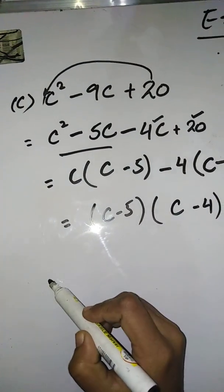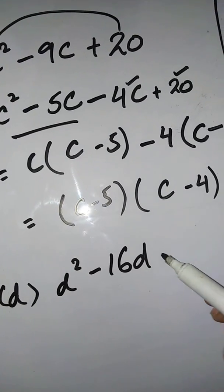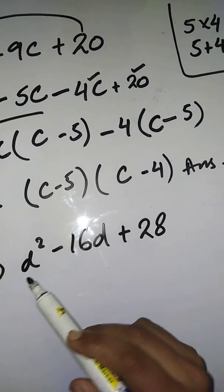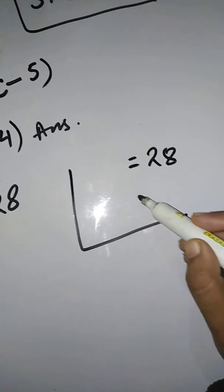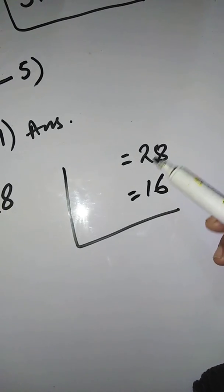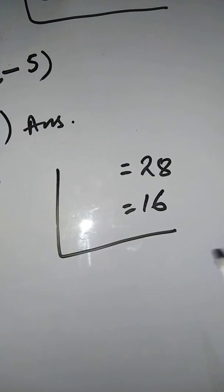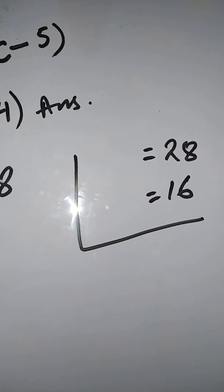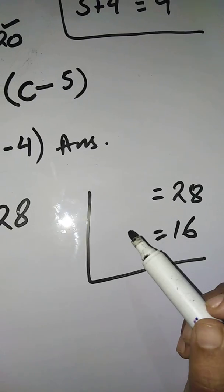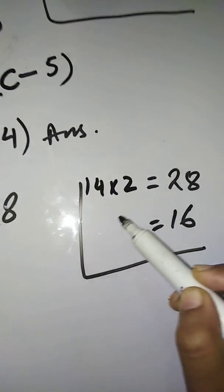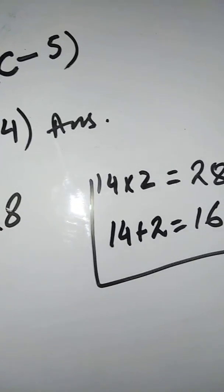Now Part (d): d² - 16d + 28. Multiply the first and last number: 1 × 28 = 28. The middle number is 16. Find two factors that when multiplied give 28 and when added give 16. The factors are 14 and 2: 14 × 2 = 28 and 14 + 2 = 16.